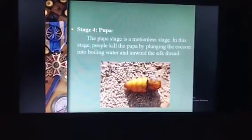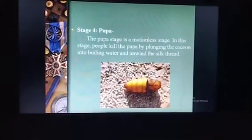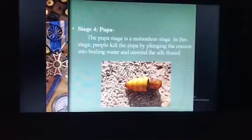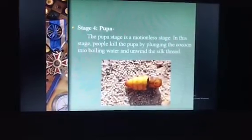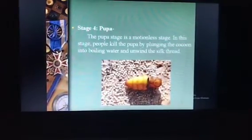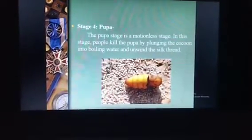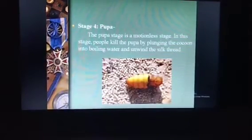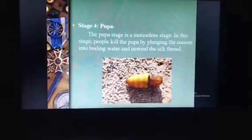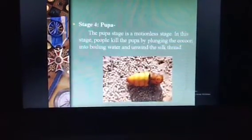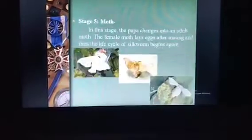Stage 4. The pupa. The pupa stage is a motionless stage. In this stage, people kill the pupa by plunging the cocoon into boiling water and unwind the silk thread.